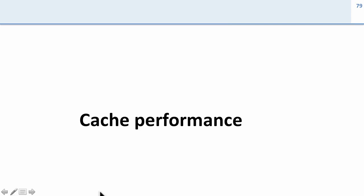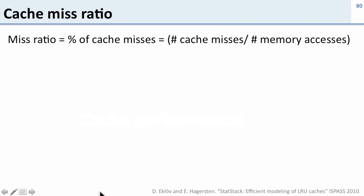Let's talk about cache performance and how we can figure it out based on how big the cache is and how much an application is missing in the cache. To figure this out we need to know a term called miss ratio, which is the percentage of cache misses — the number of times you miss in the cache divided by the total number of times you access the cache.